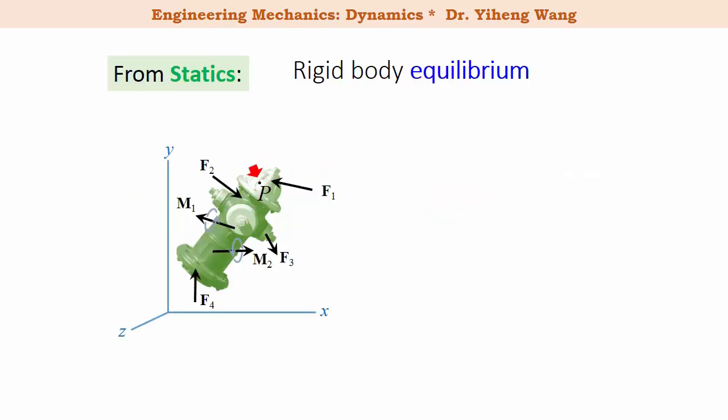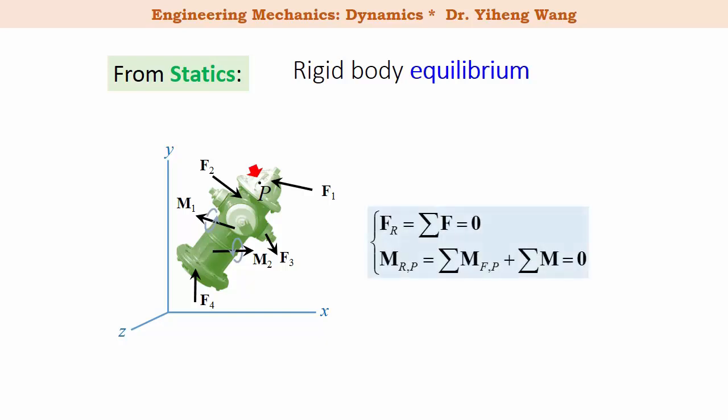If you recall from statics, we learned the rigid body equilibrium conditions: if a rigid body is subjected to multiple external forces and couple moments, for this rigid body to be in equilibrium, the resultant external forces acting on it must be zero in vector form, and the resultant moments of all external forces and couple moments summarized about an arbitrary point P must be zero as well. This equation is also in vector form.